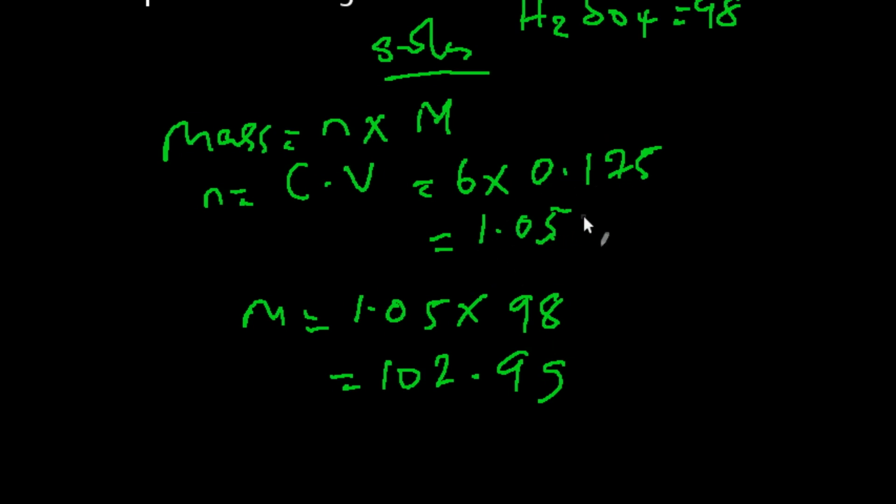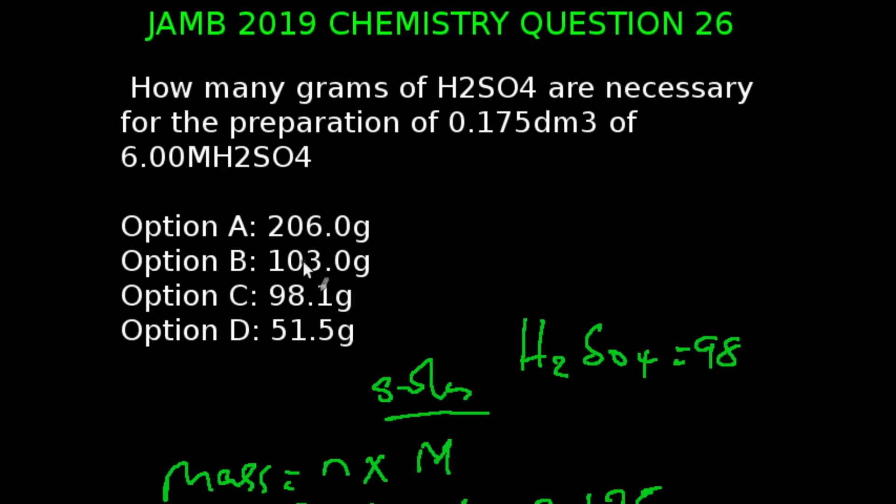That's going to give us 1.05. So if we multiply 1.05, which is our number of moles, multiplied by molar mass, which is 98, we're going to be having 102.9 grams. This is approximately 103 grams. That corresponds to Option B.